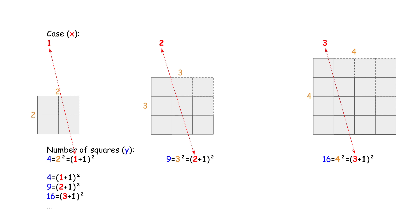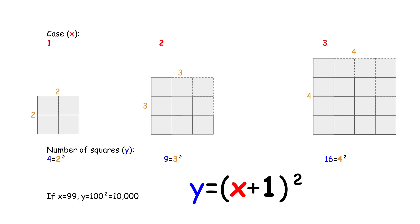The equation is y equals (x + 1) squared. Now if x equals 99, that's the 99th case. We use this equation to get the number of squares: 99 plus 1 squared, which is 100 squared, which equals 10,000.